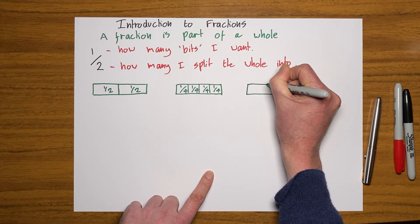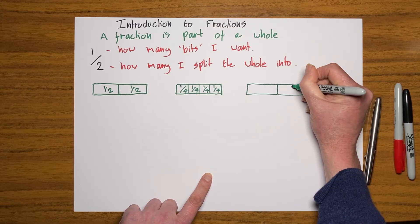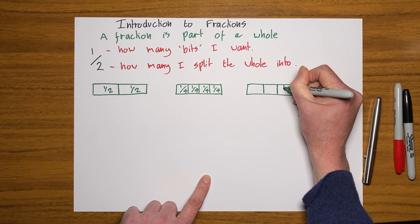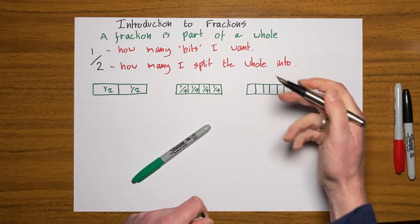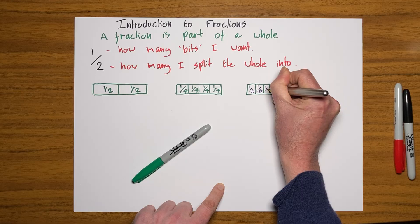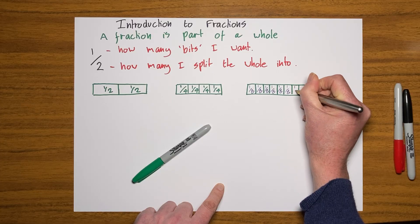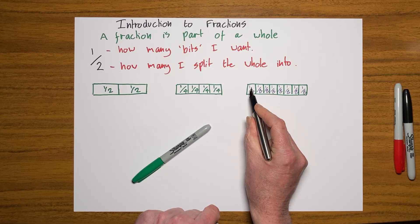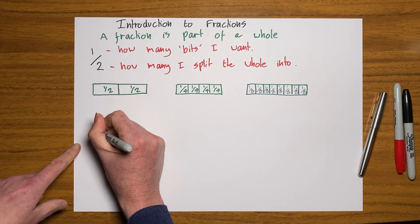This time I'm going to split this bar into eight different bits. So I split it into half first, then into quarters, and if I split each one of those down here, each one of those is now worth one eighth. You can see each of those is one part out of eight.